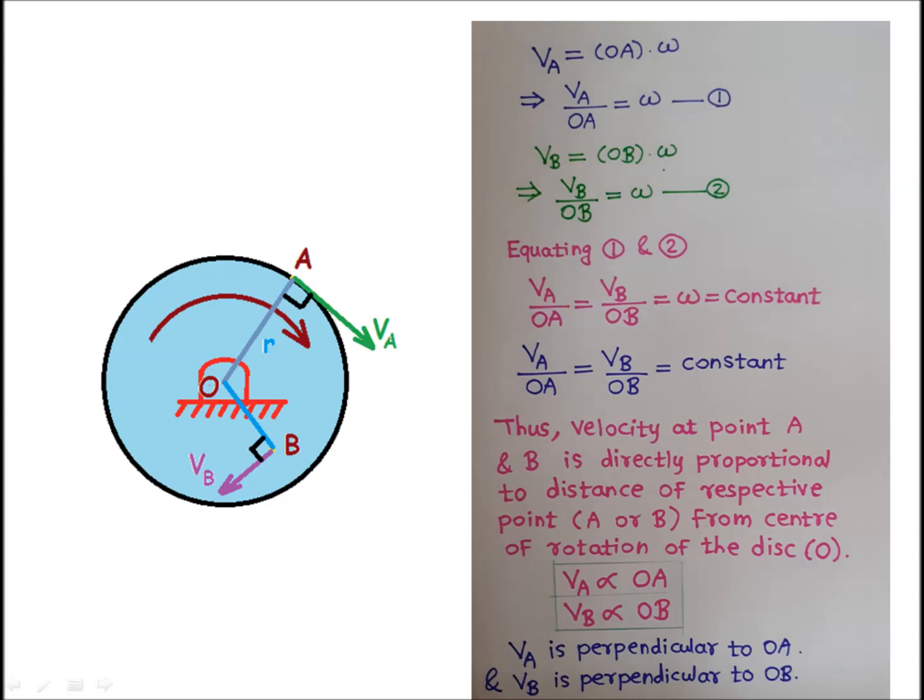We can equate equation 1 and 2 as the right-hand side is the same. So we can write VA upon OA equals VB upon OB, which equals omega, which equals constant. Thus we can say velocity at points A and B is directly proportional to the distance of the respective point A or B from the center of rotation of the disk O. That is, VA is proportional to OA and VB is proportional to OB. VA is perpendicular to OA and VB is perpendicular to OB.